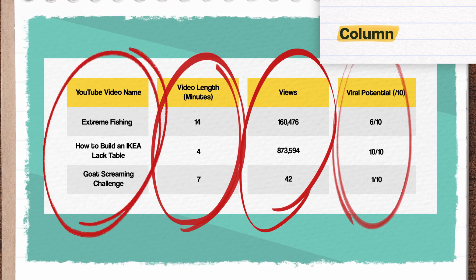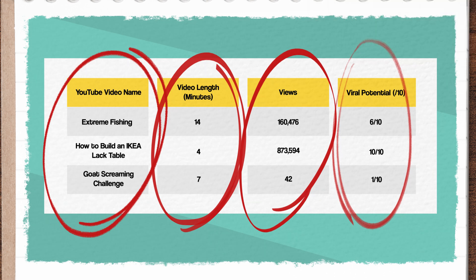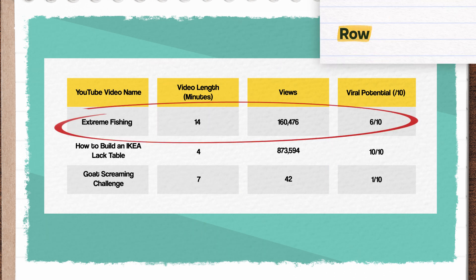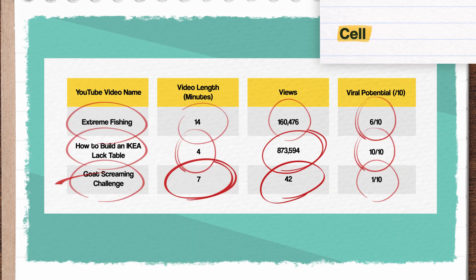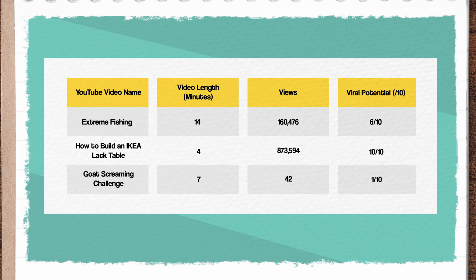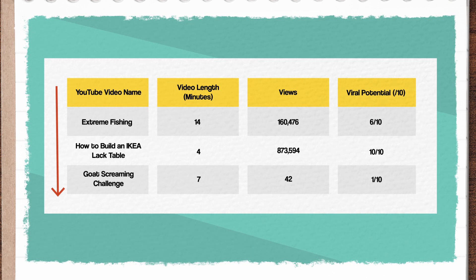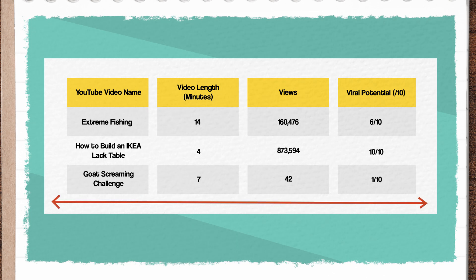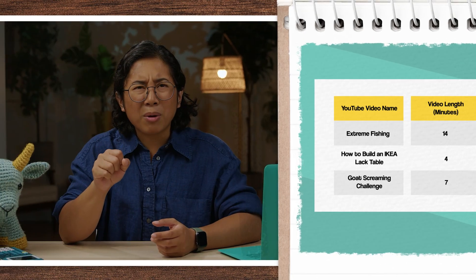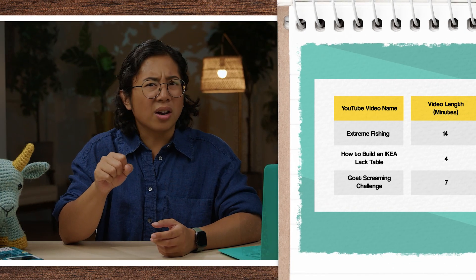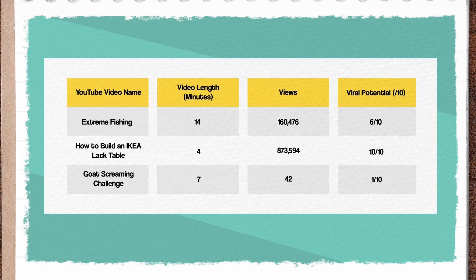Say we've got a table looking at different behaviors for YouTube videos. Each column typically represents different characteristics like name, length, and times watched, while the rows typically connect those properties to a specific video. The actual cells would contain information like 'goat screaming challenge' or an odds of going viral score of 6 out of 10. Columns run vertically and represent an individual variable from the multivariate characteristics of the data. Meanwhile, rows are a separate item in the dataset and run horizontally.